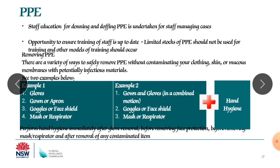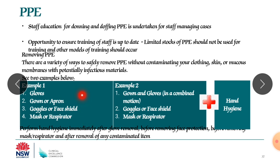For removing PPE safely without contaminating clothes, skin, or mucous membranes: Example one — remove gloves, then gown or apron, then goggles or face shield, then mask or respirator. Example two — remove gown and gloves in a combined motion, then goggles or face shield, then mask or respirator. After removal, perform hand hygiene immediately. Wash your hands and also wash your body.